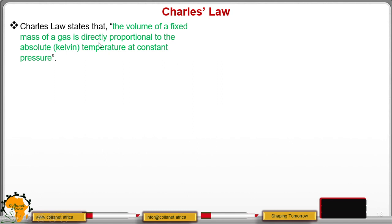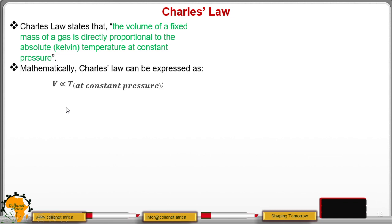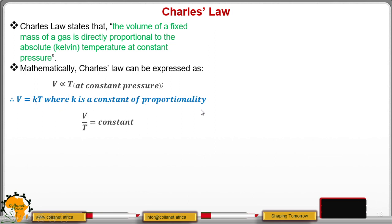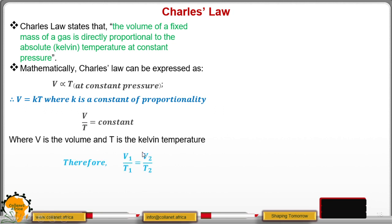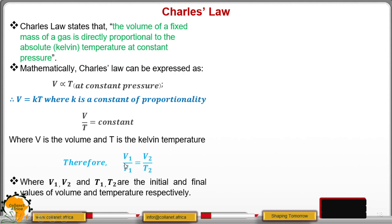We can now state Charles Law. Charles Law states that the volume of a fixed mass of a gas is directly proportional to absolute temperature at constant pressure. Mathematically, V is directly proportional to T provided the pressure is constant. Replacing the proportionality sign with an equal sign and a constant, we get V equals KT. Dividing through by T gives V over T equals a constant, where V is volume and T is Kelvin temperature. Therefore, V1 over T1 equals V2 over T2, where V1 and T1 are initial values and V2 and T2 are final values of volume and temperature.